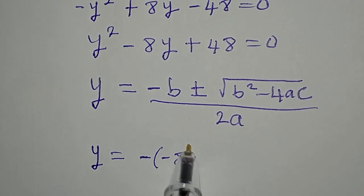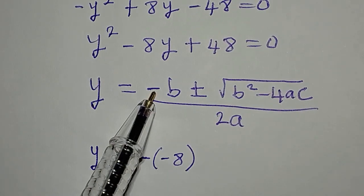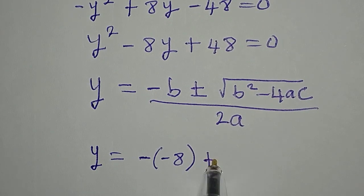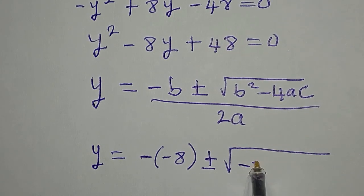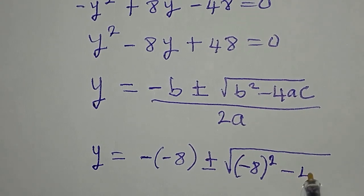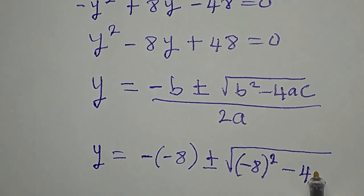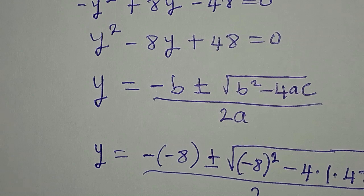...minus 8, because b itself is minus 8 and there's already a negative in the formula. Then plus or minus: b squared is minus 8 squared, minus 4 times a which is 1, times c which is 48. We divide everything by 2 times 1, which is still 2.